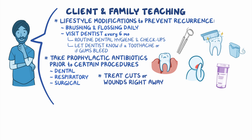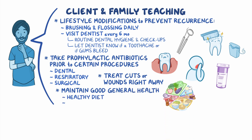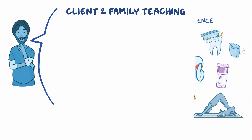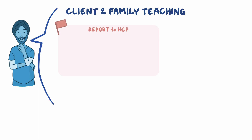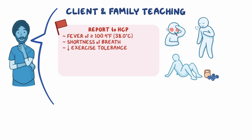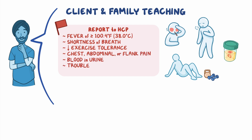Lastly, talk about the importance of maintaining good general health by eating a healthy diet and getting regular physical activity, as tolerated, as well as avoiding smoking. Instruct your client to contact their healthcare provider right away if they develop a fever of 100.4 degrees Fahrenheit or 38 degrees Celsius or more, shortness of breath, decreased exercise tolerance, chest, abdominal, or flank pain, blood in their urine, trouble speaking, or problems moving one side of the body.